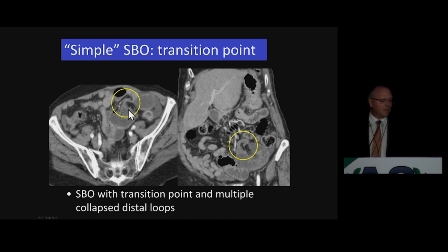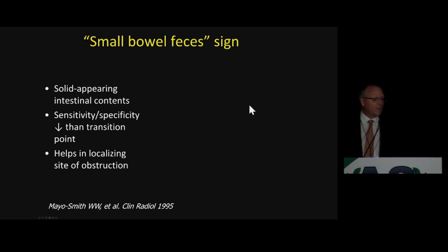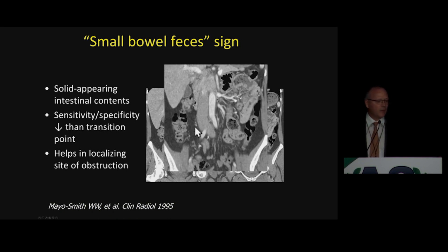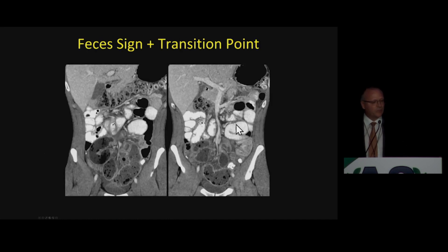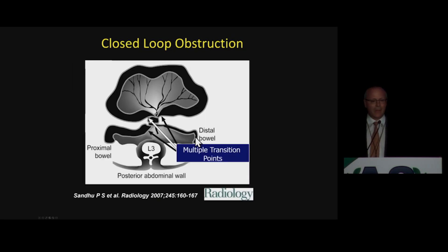Translating that to CT images in axial and coronal planes: again, a point of transition, proximal dilatation with fluid, distal collapse shown very nicely on both axial and coronal planes. The small bowel feces sign can be seen, but it's not as helpful as the transition point. It represents solid-appearing intestinal contents typically found just proximal to the point of transition, helping to localize that potential transition point. We see the small bowel feces sign, and exactly distal to the more formed content in the small bowel, that's where the transition point is located.